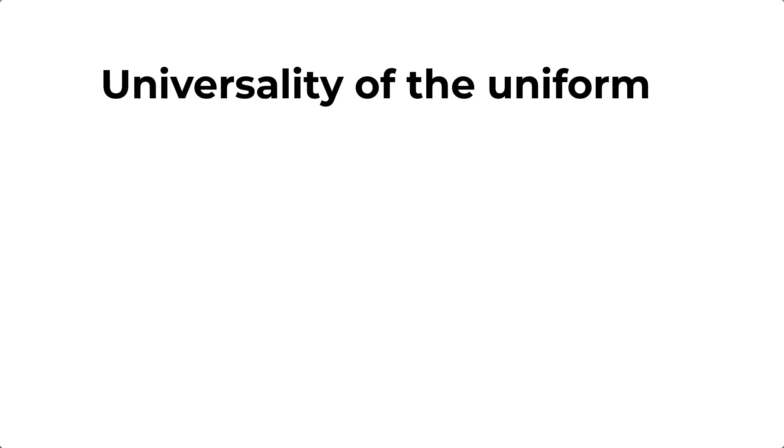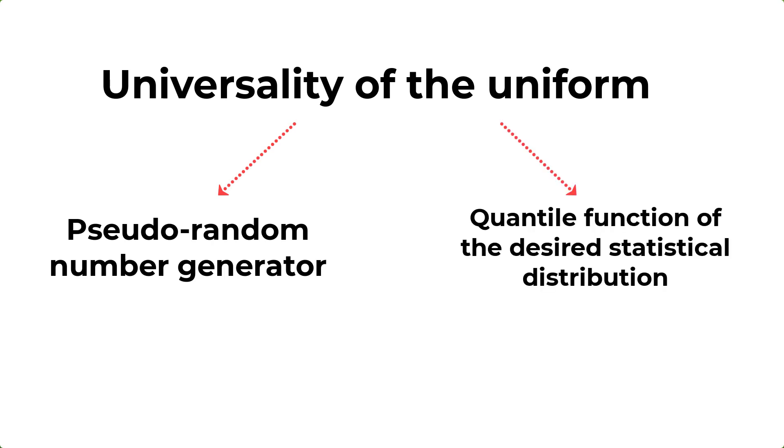We can simulate pretty much any kind of statistical distribution using a concept known as the universality of the uniform. The universality of the uniform requires two different inputs. It requires a pseudo-random number generator, and it requires the quantile function of the desired statistical distribution that we wish to simulate.